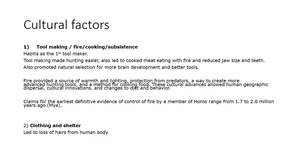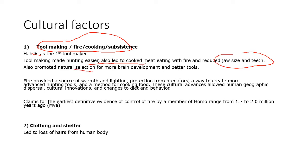Turning to cultural factors: tool making by Homo habilis made it easier to cook food with fire, which led to reduced jaw size. Natural selection also promoted more brain development for the creation of better tools — this feedback system was already discussed in the chronology.